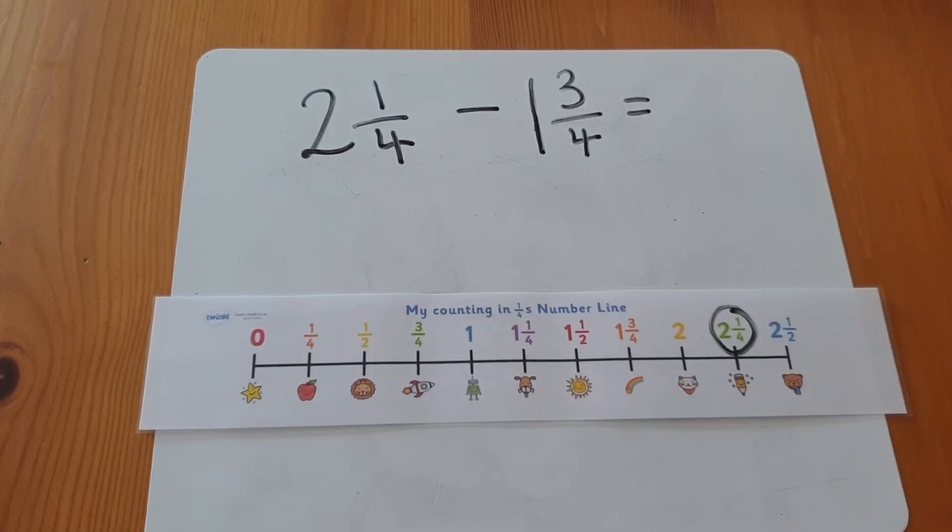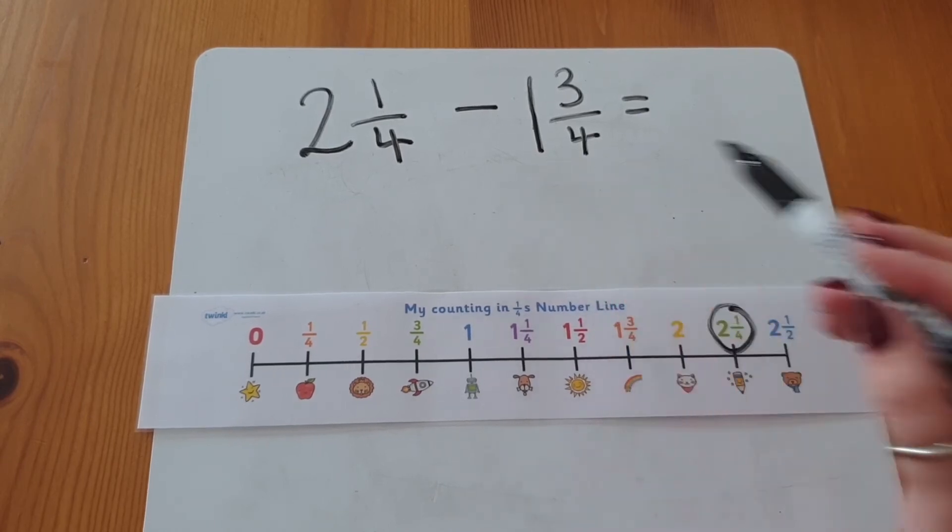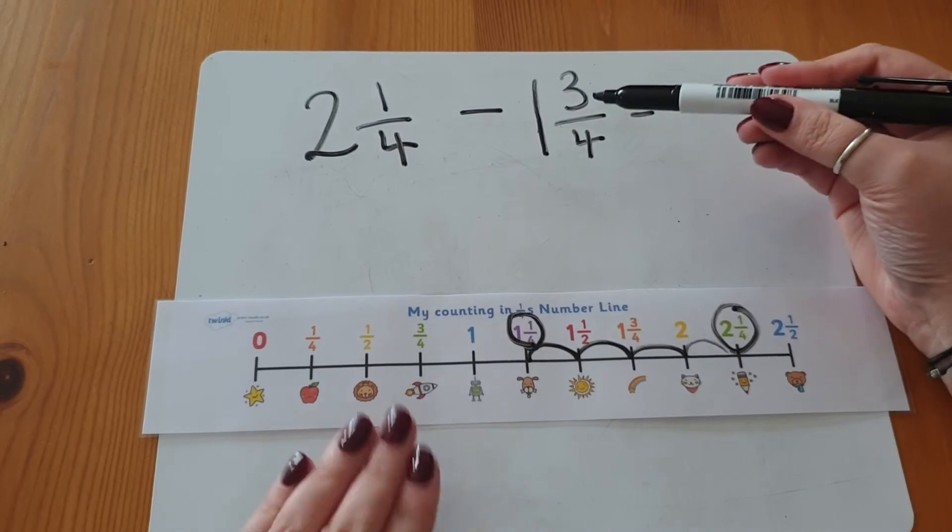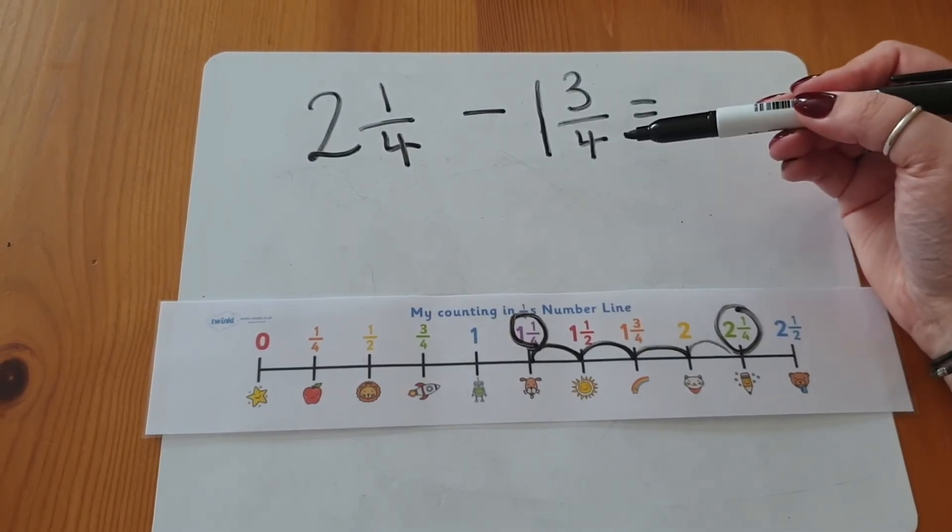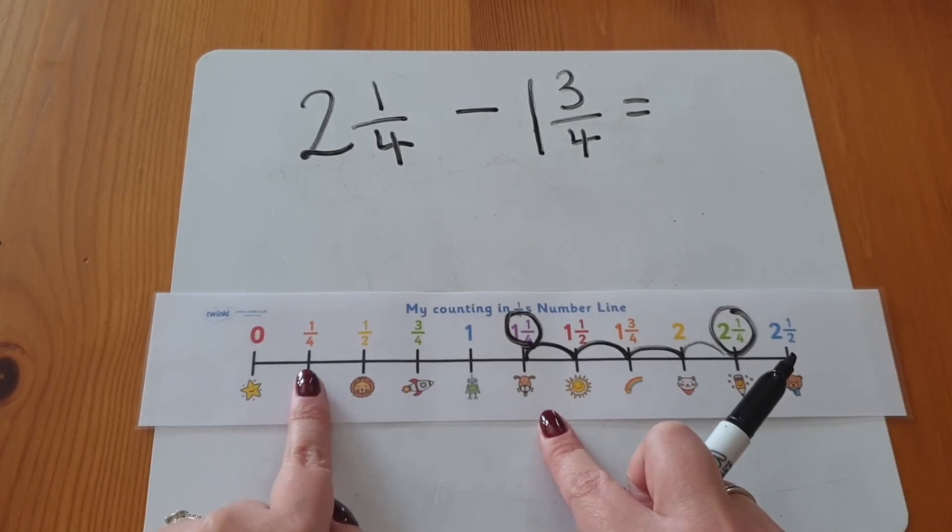Then I could separate this into one whole and three quarters. So I'm going to take away the one whole first. I now need to take away my three quarters, which I know is three jumps because one jump is one quarter.